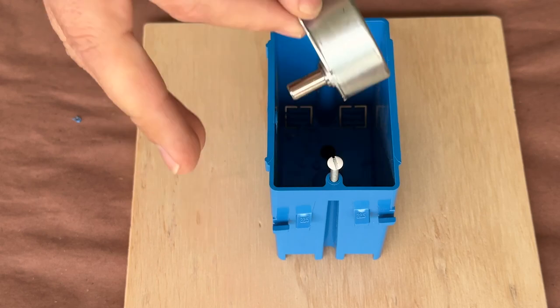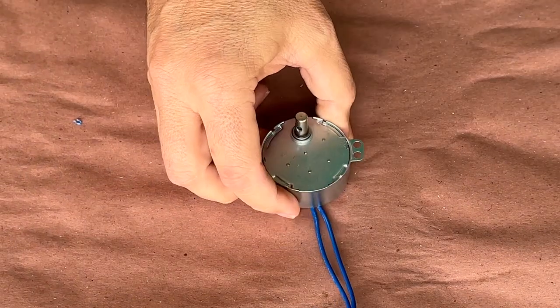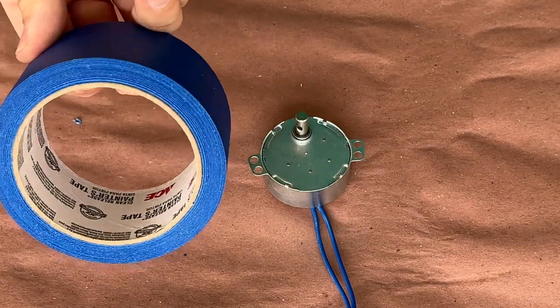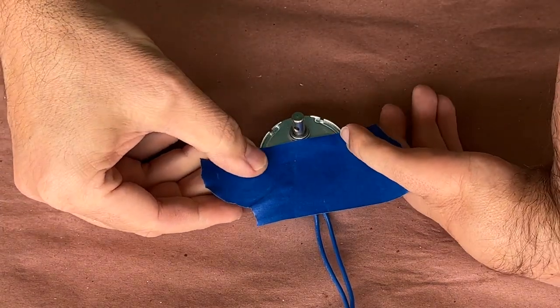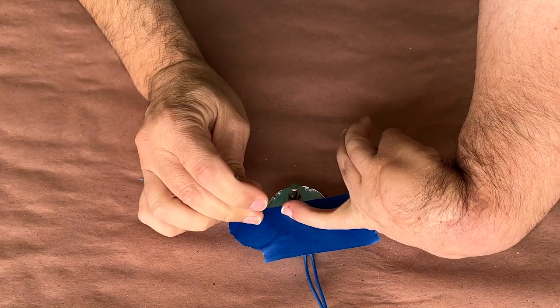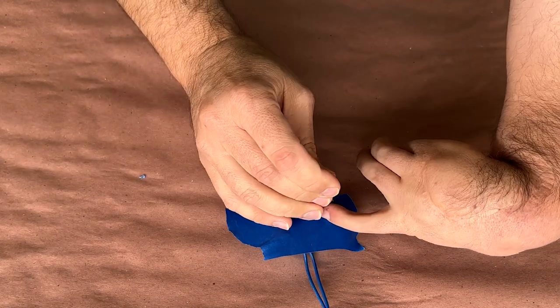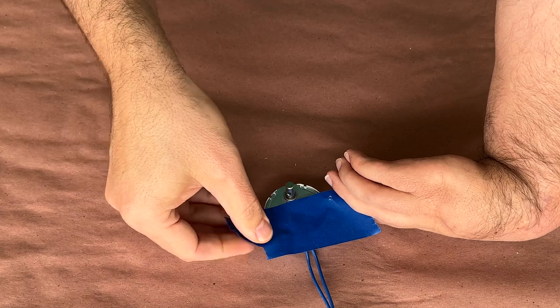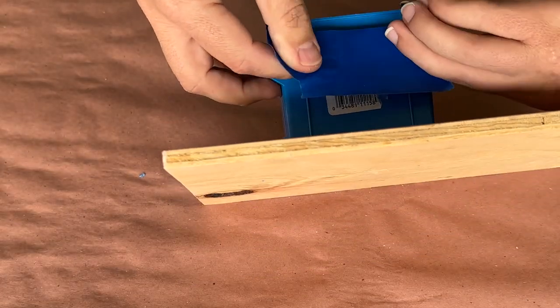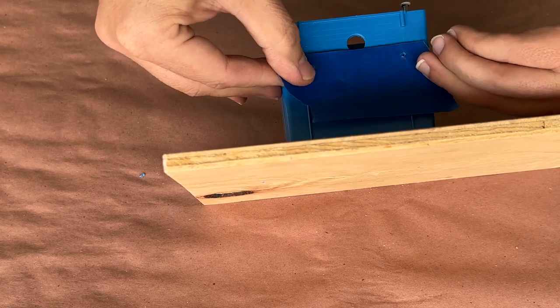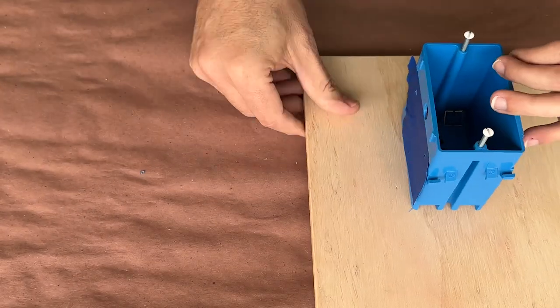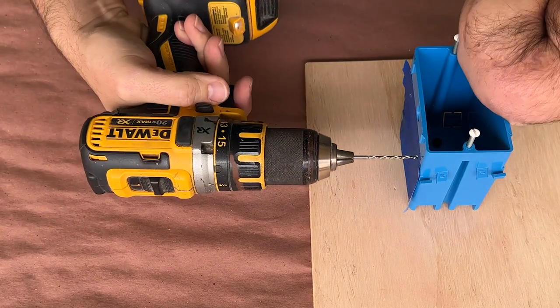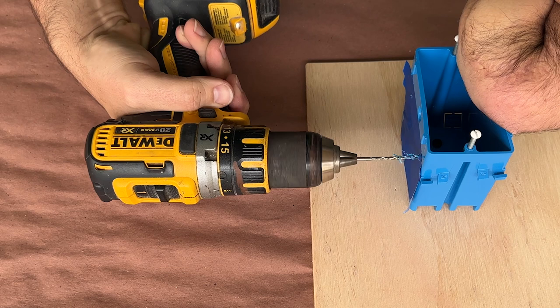After a quick test fit, it was time to make a template for the motor mount holes with a bit of tape. This way I can transfer the spacing to my gang box to make sure that they're in the right spot. Then it was a bit more drilling, and then I could install the motor with a few nuts and bolts.